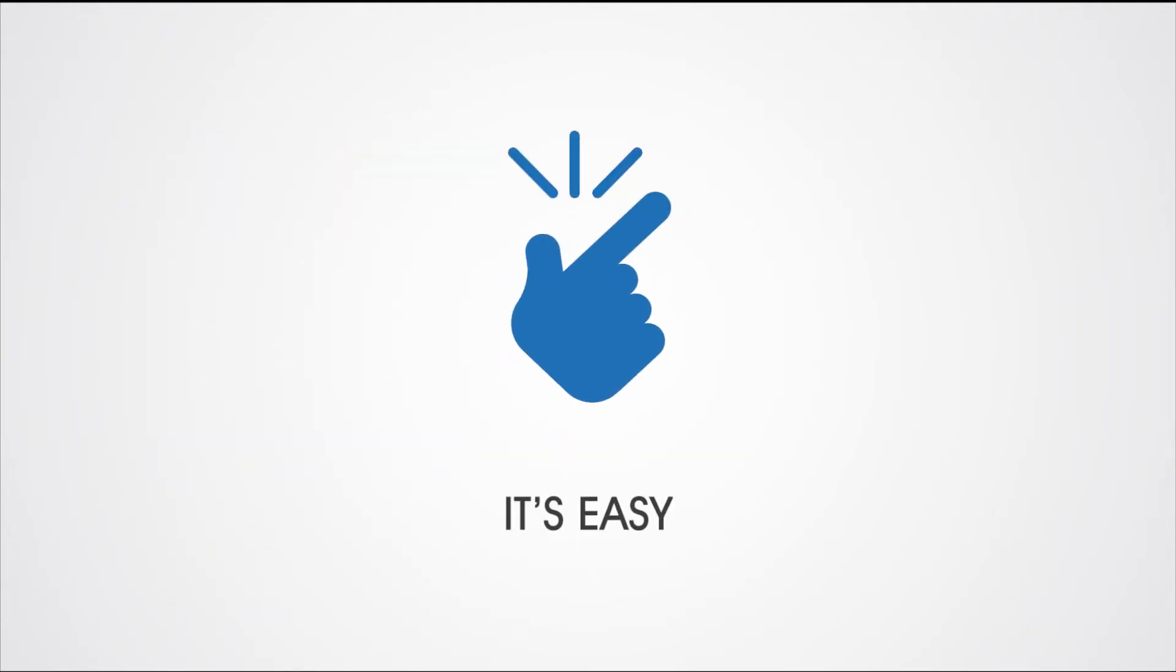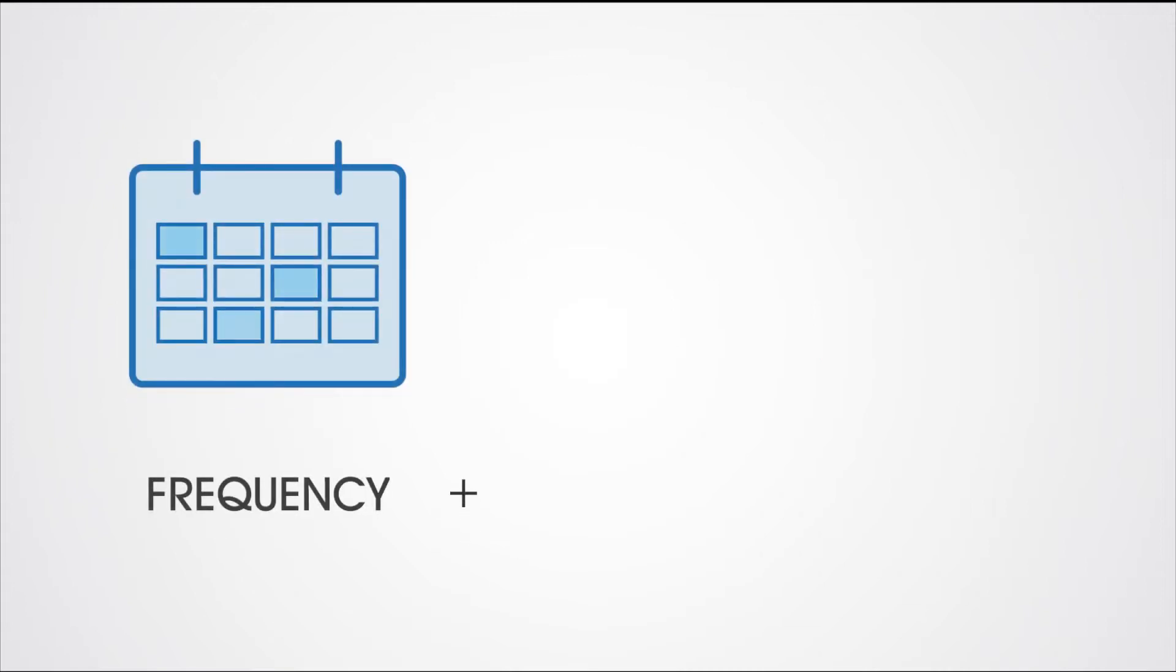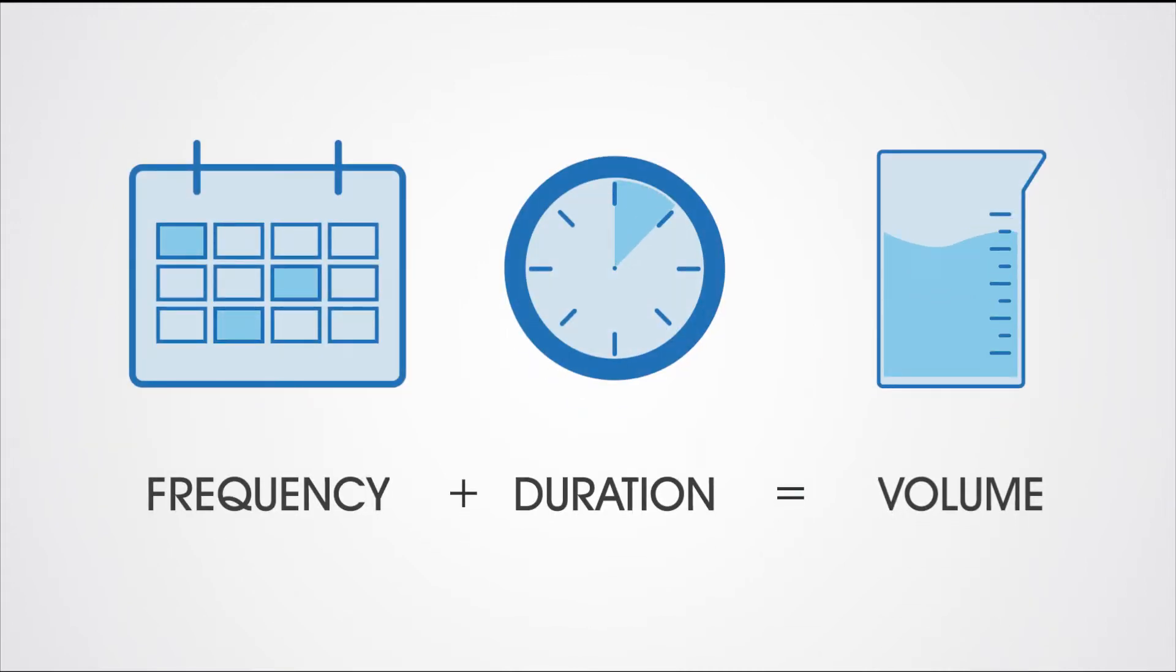So how does it work? It's easier than you think. A controller tells solenoid valves when to release water into the system. You can control when and how long to water based on your irrigation system.